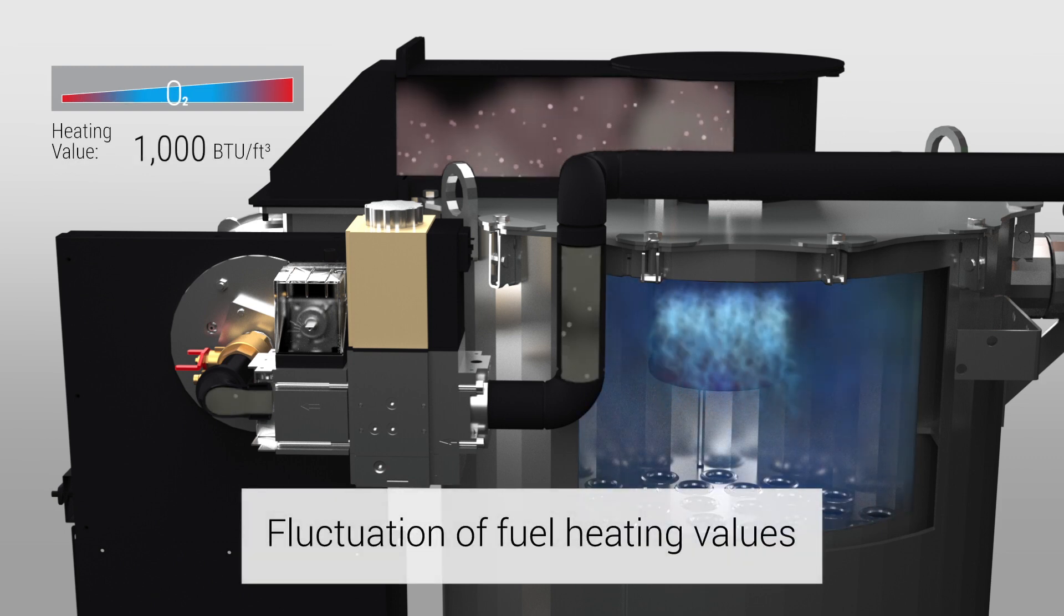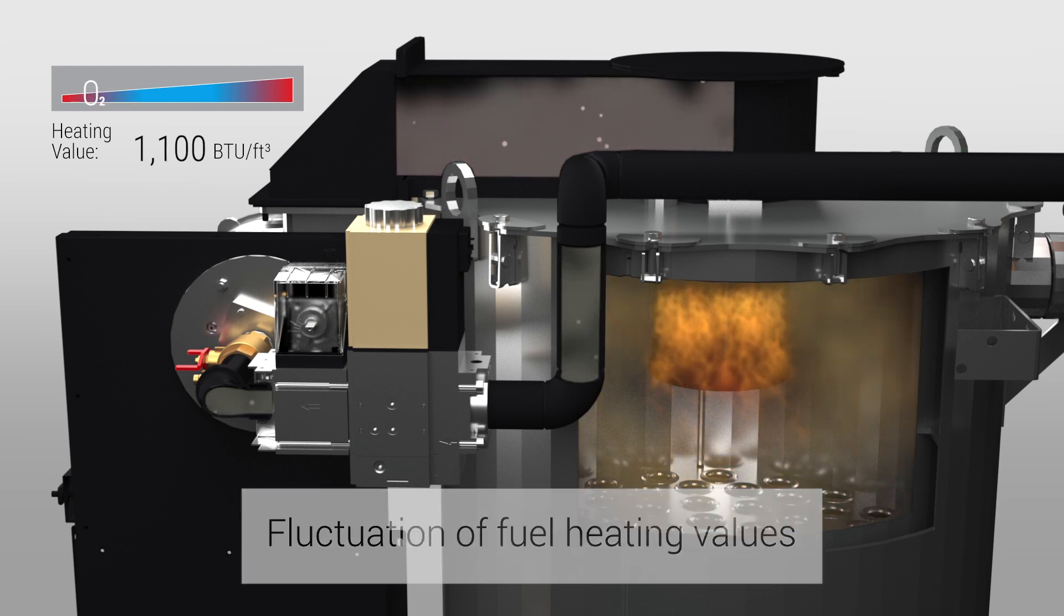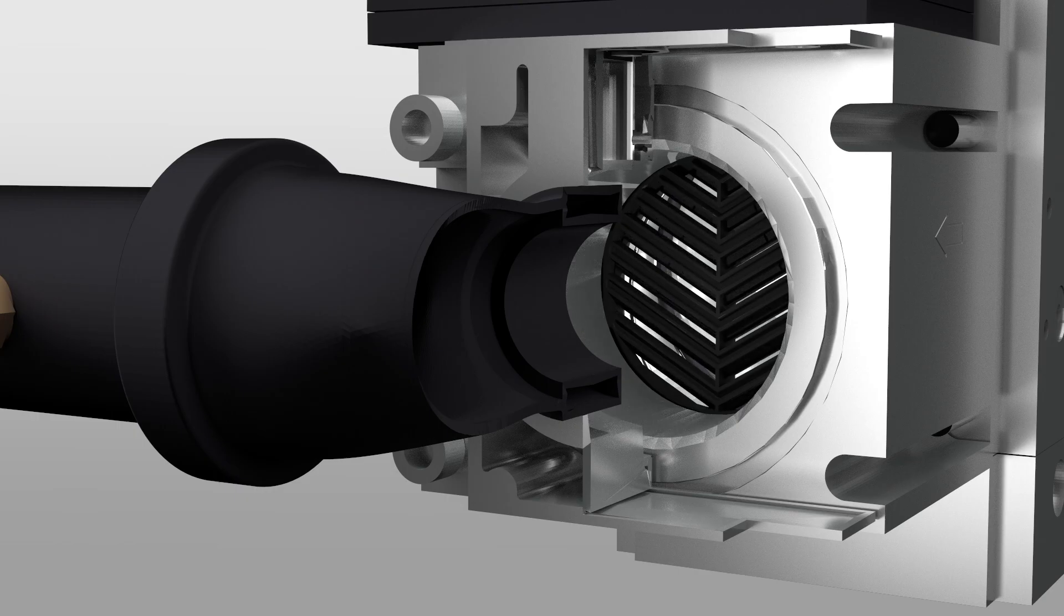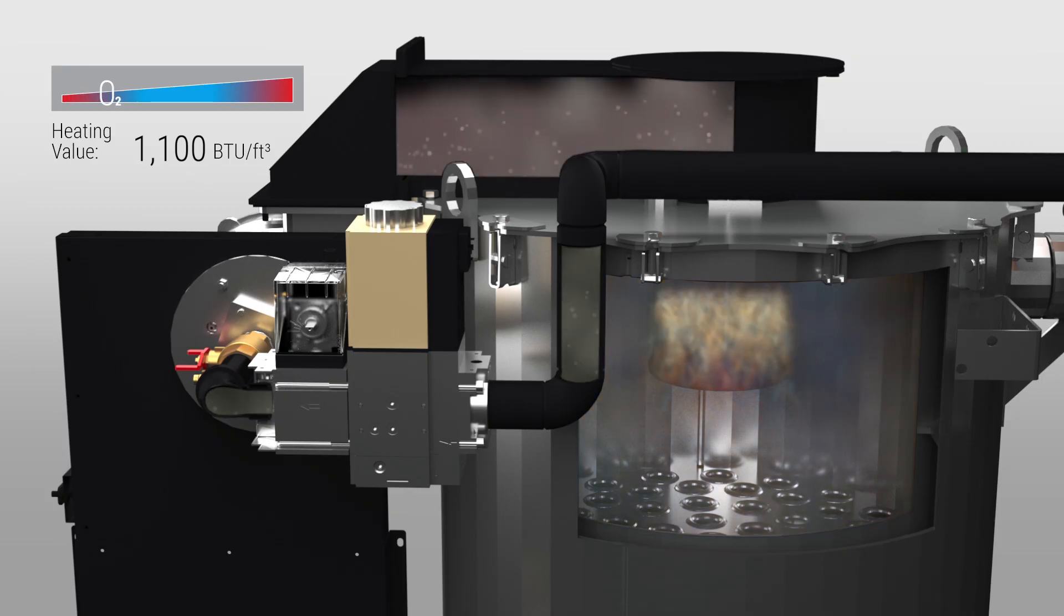Fluctuations of fuel heating values. When the heating values of the fuel gas increase, less gas flow is needed for optimal performance. The hot system automatically adjusts the gas flow to the best fuel air ratio.